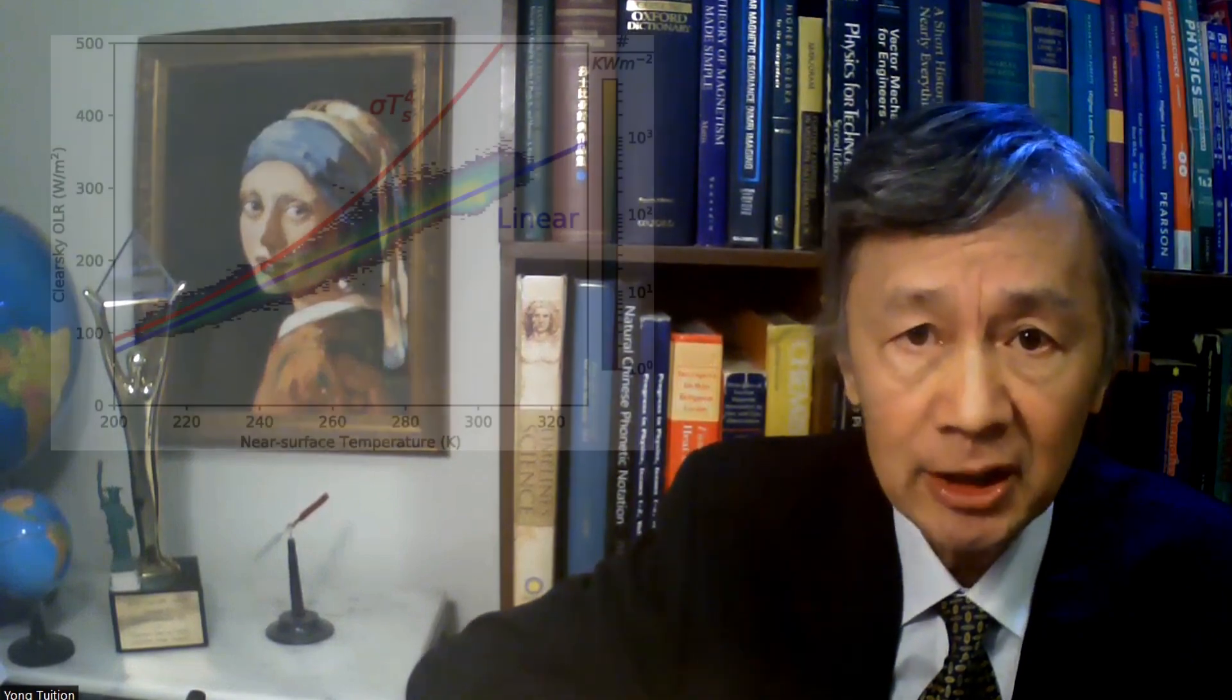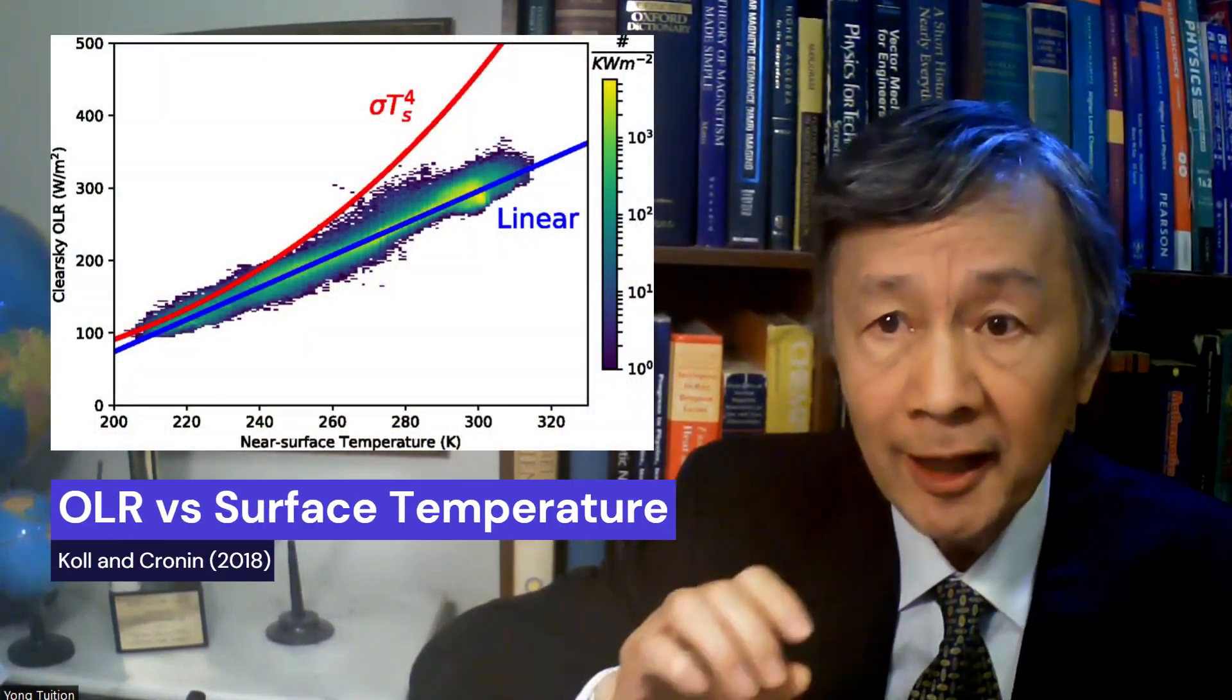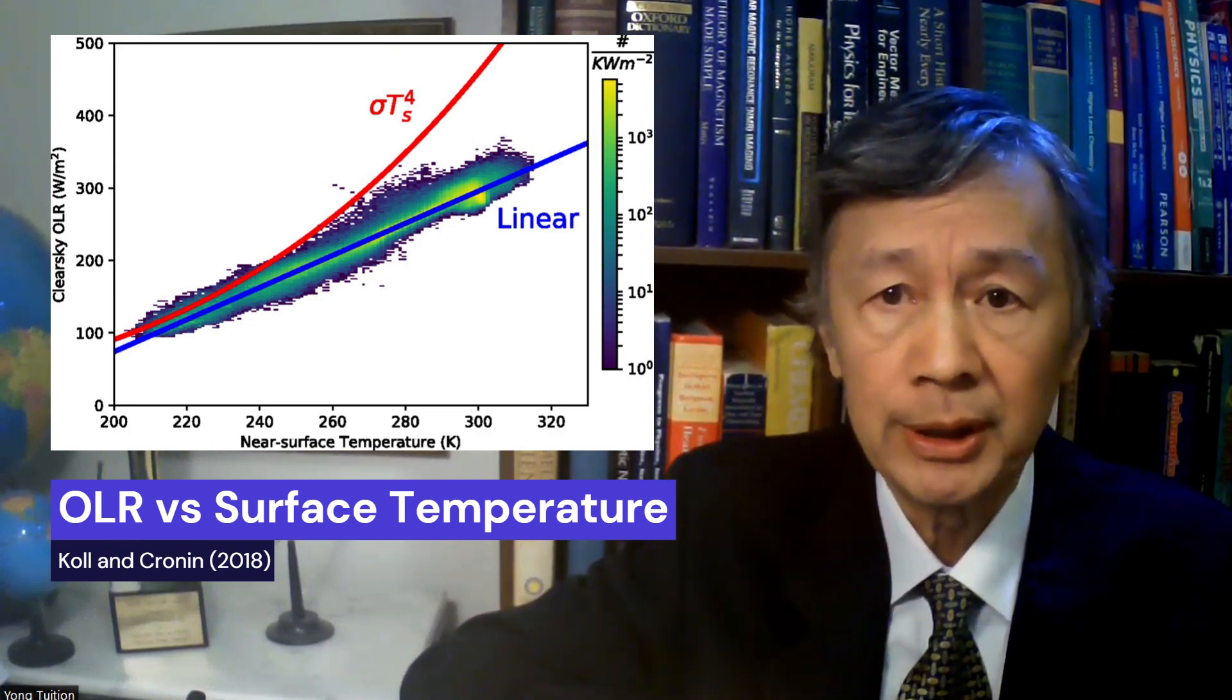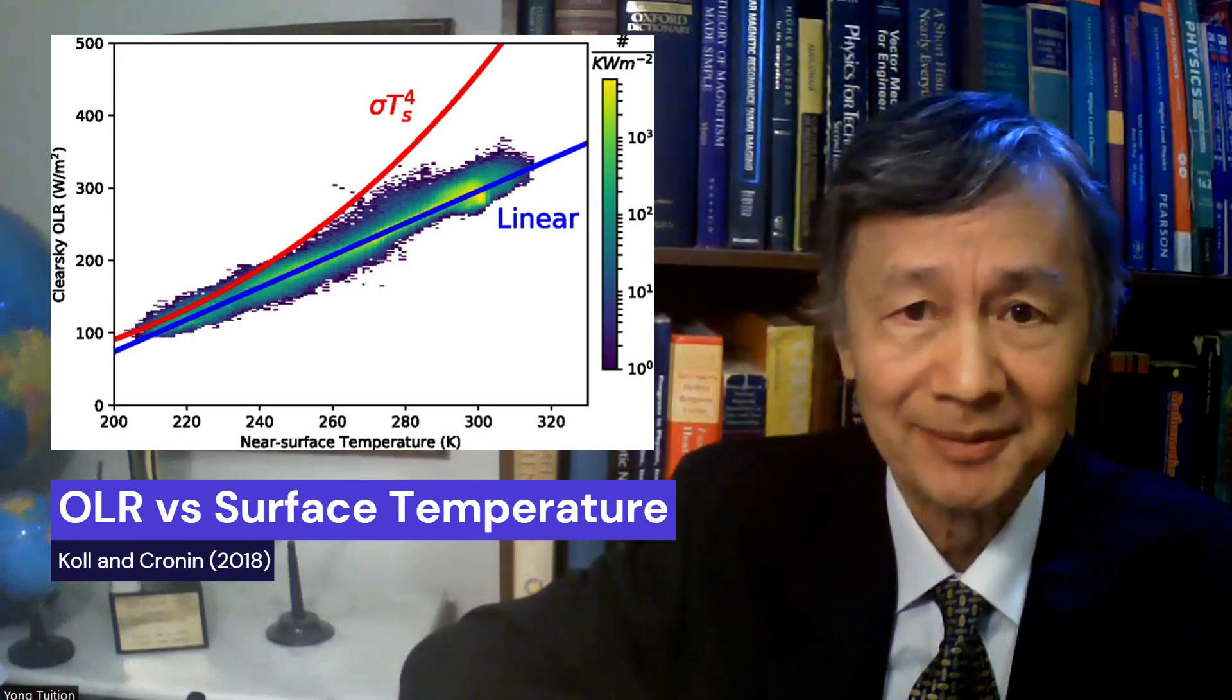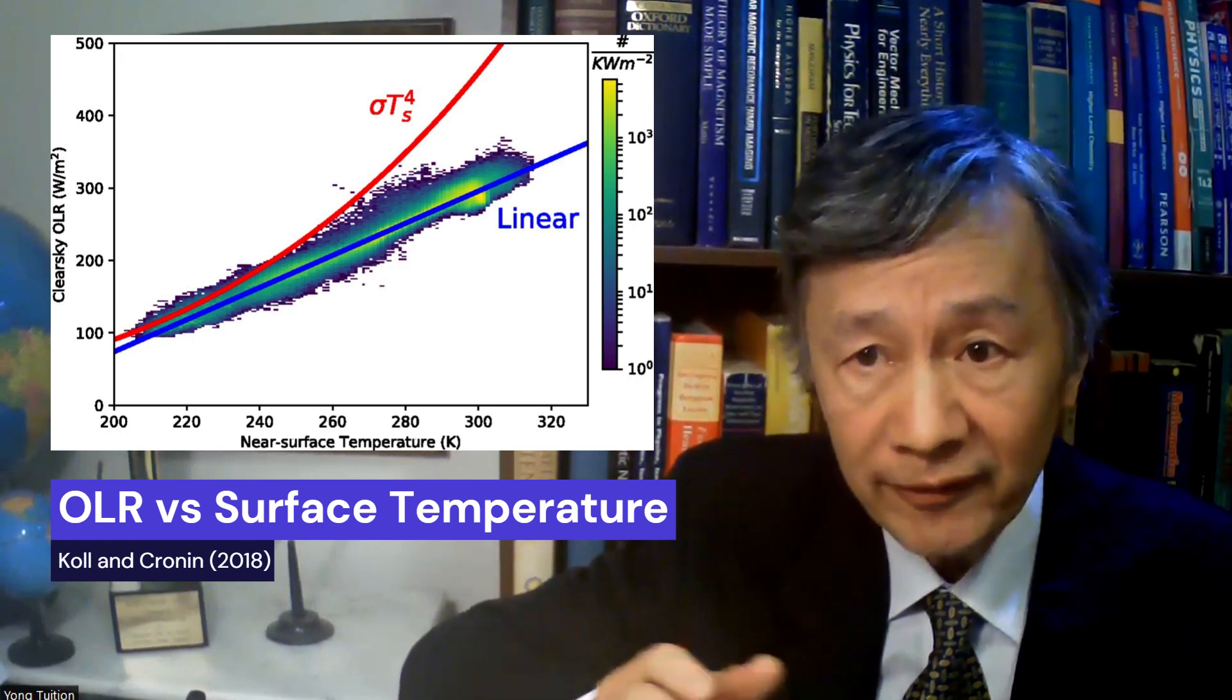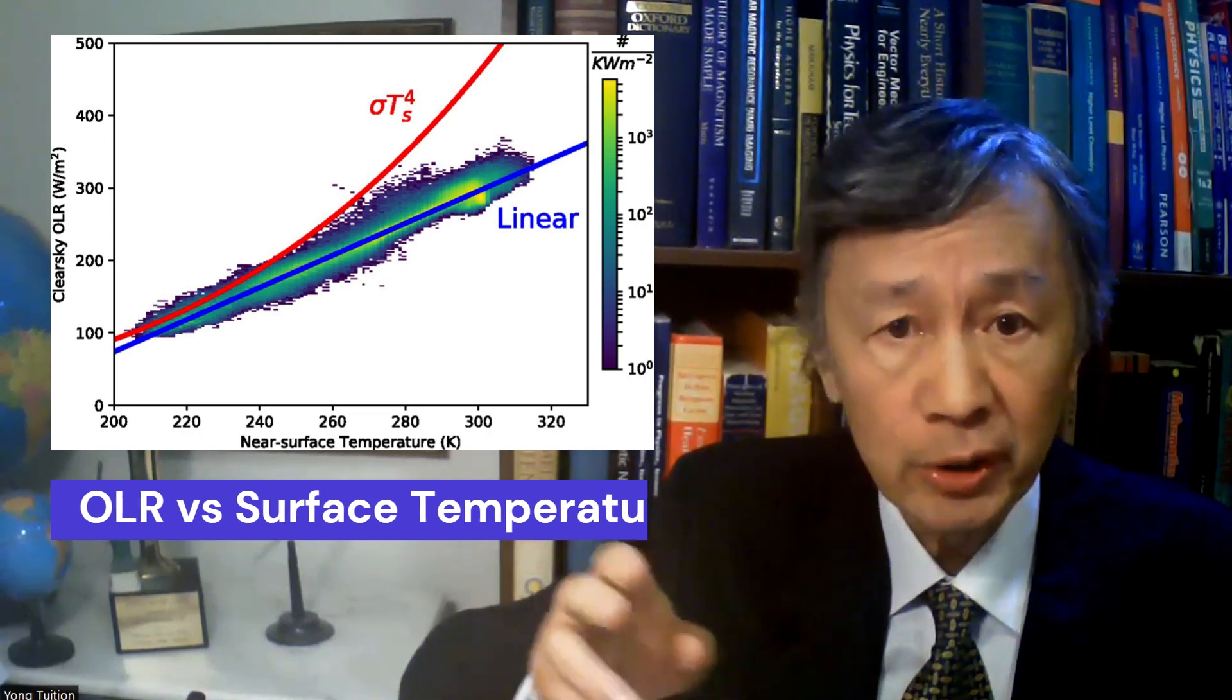They speculated this might be caused by the emission heights of the OLR in the atmosphere without any quantitative formula. More recently, in 2018, Koll and Cronin wrote that the linear relation between OLR and the surface temperature is a fundamental yet poorly understood feature of Earth's climate, and suggested it was due to water feedback. The slope they used is 2.2, which has immediately become a kind of the gold standard for calculating the climate sensitivity.